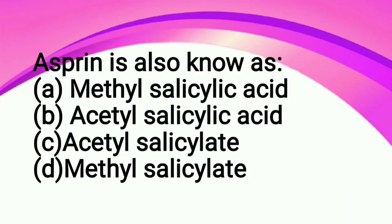Aspirin is also known as: A methyl salicylic acid, B acetyl salicylic acid, C acetyl salicylate, D methyl salicylate. So the correct answer is option B, which is acetyl salicylic acid. Aspirin is called acetyl salicylic acid and it's generally used as an analgesic.